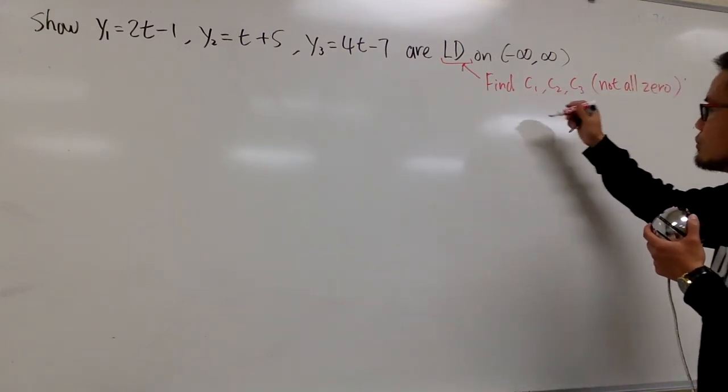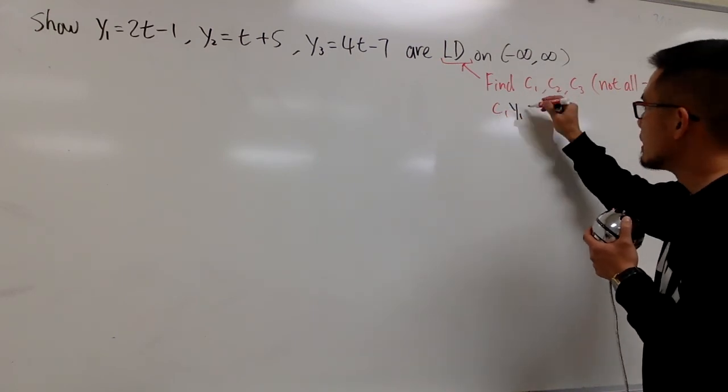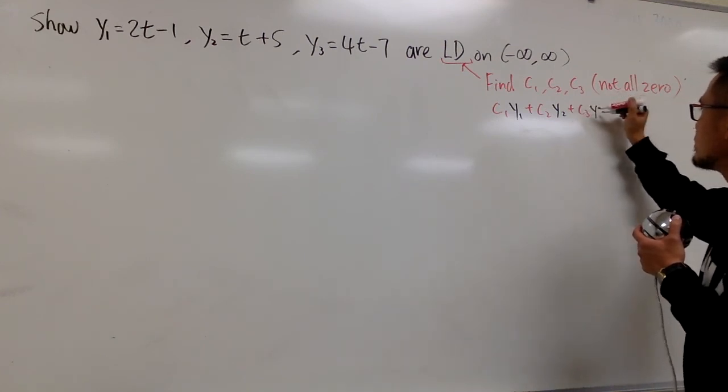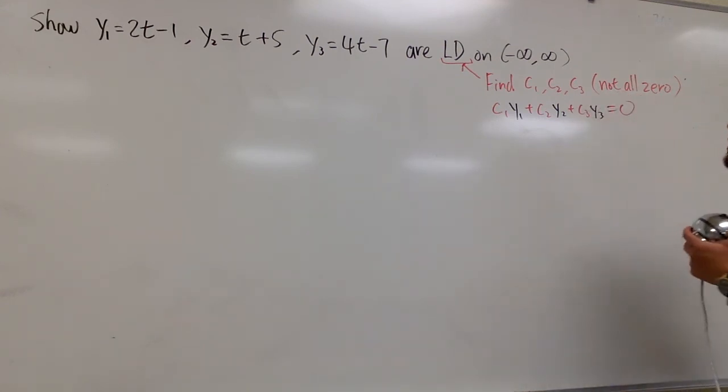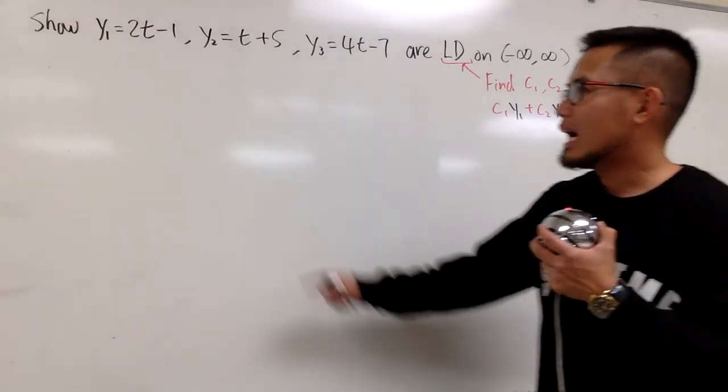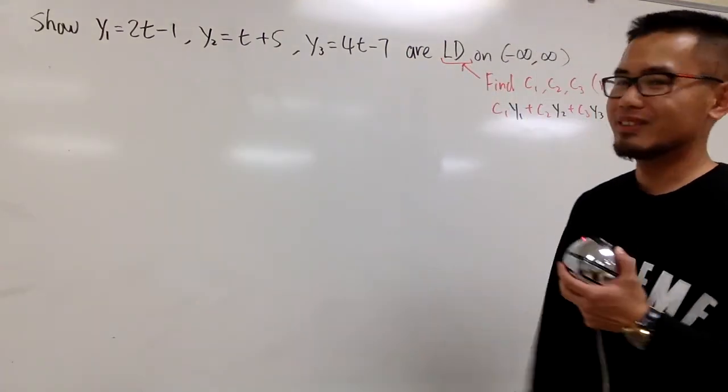Find c1, c2, c3 so that we have an answer to this: c1*y1 plus c2*y2 plus c3*y3, this is equal to zero. We are going to make this happen. So we have these three functions right here. They are all linear functions, and we hope this will work. So here we go.